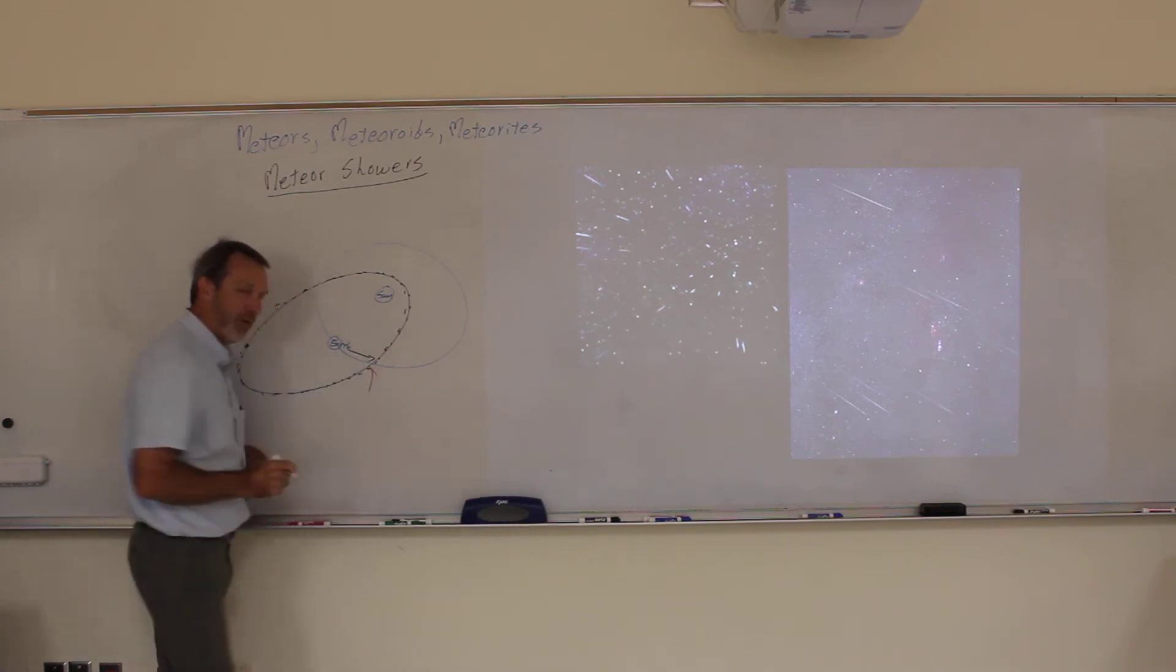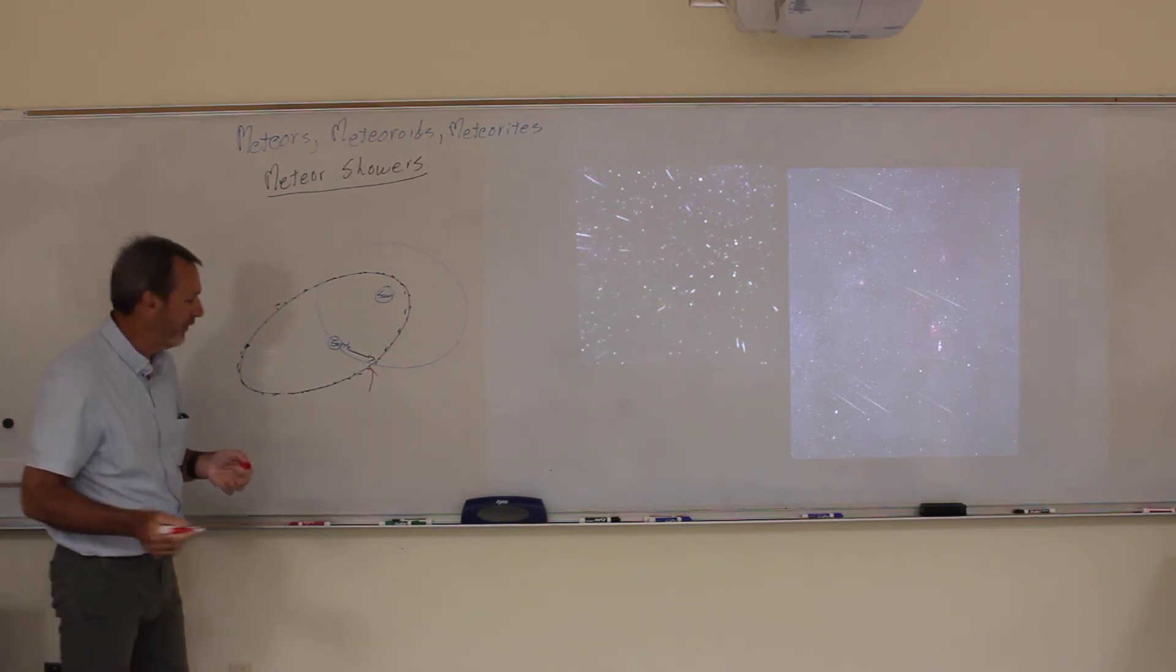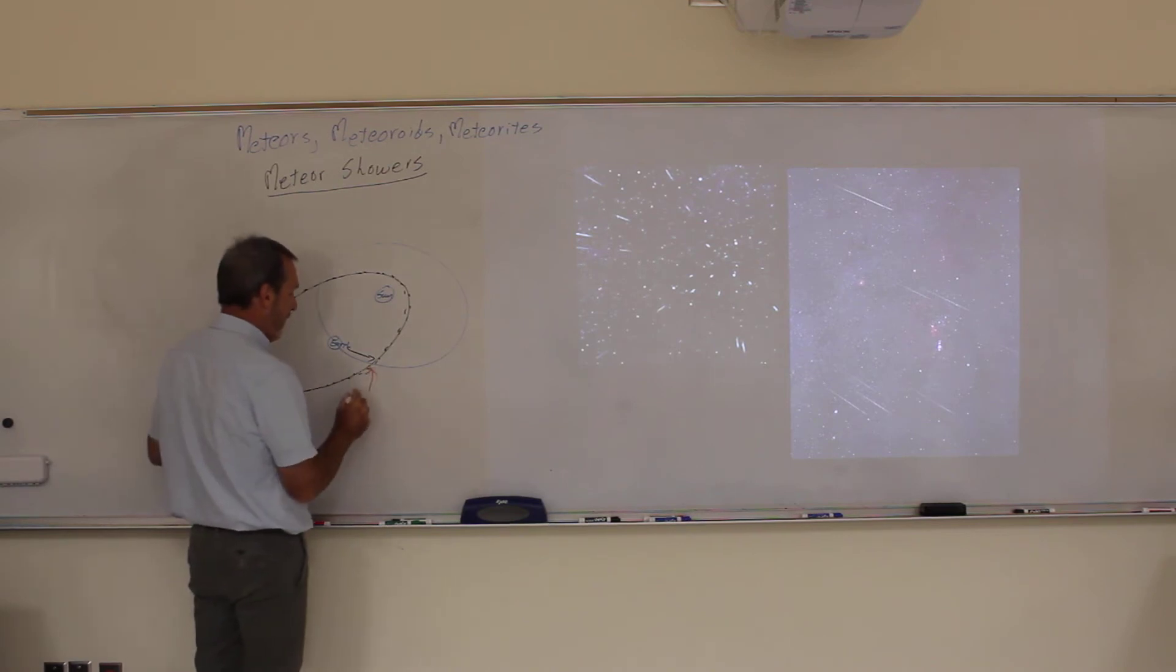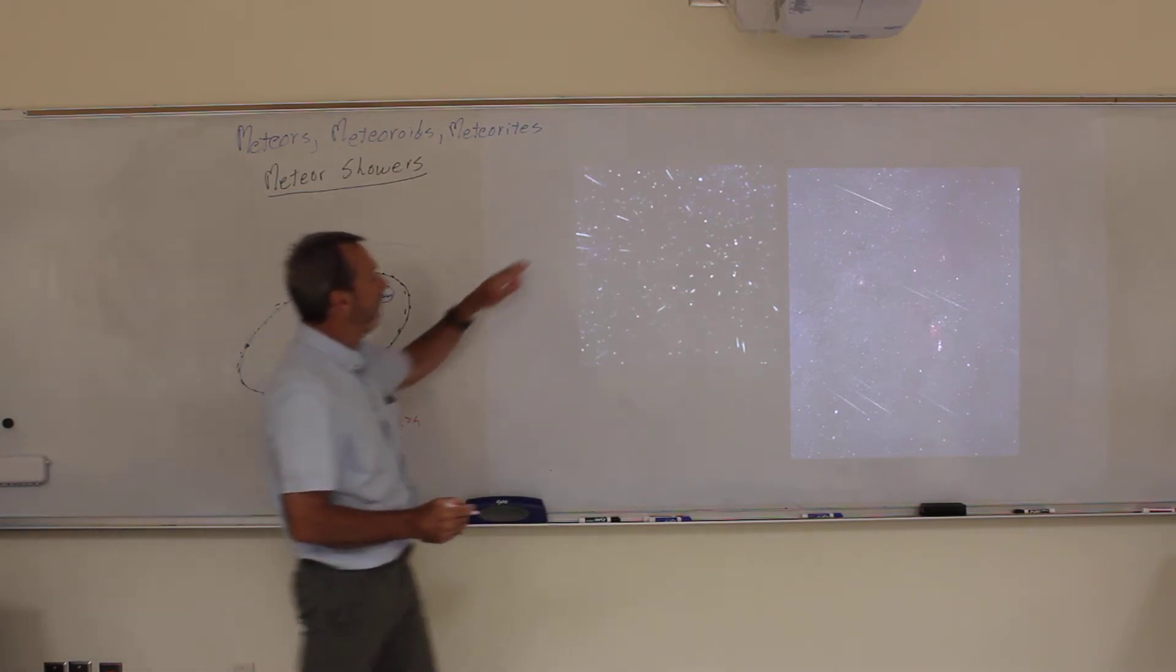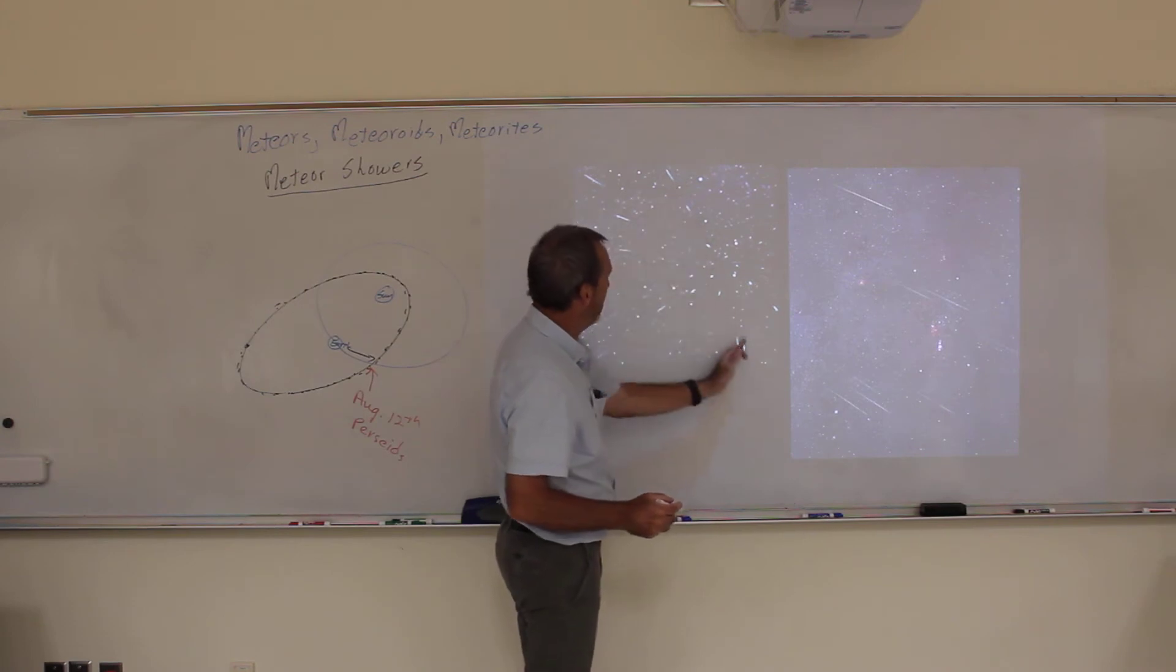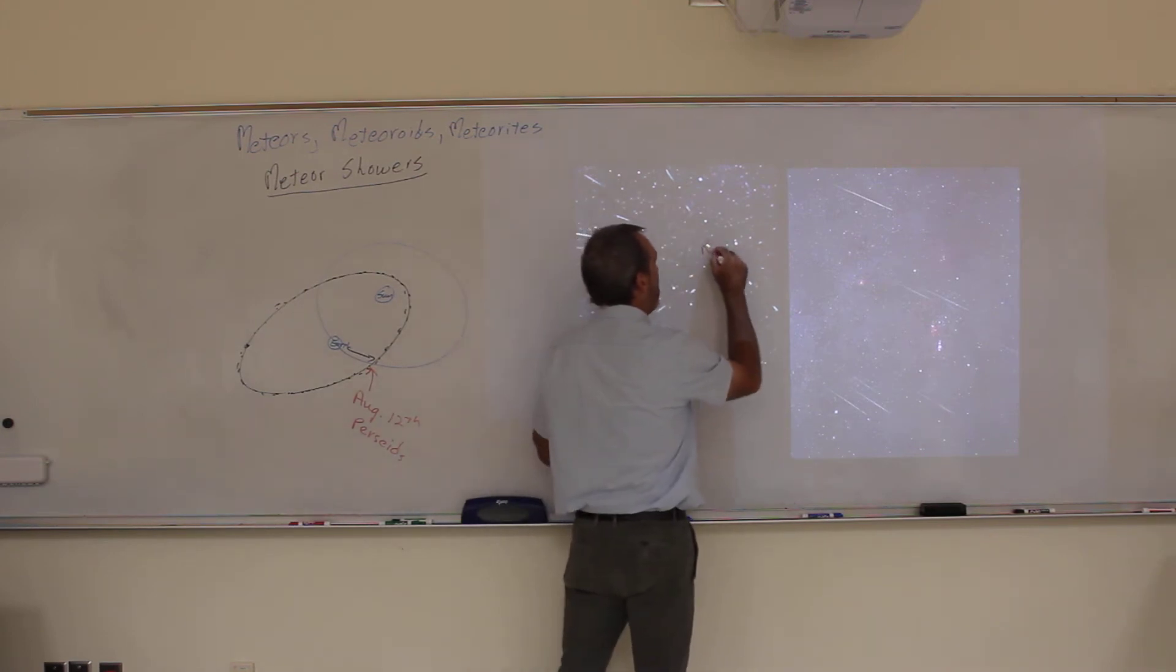And the earth always gets back to that same spot in its orbit at the same time. So the earth, when it's always there, which is pretty much the same time every year, will have a meteor shower. Like one of the most famous is around August 12th every summer. It's called the Perseids. So all the meteors, if you draw a line backwards from all these meteors, they all seem to come from a point in the sky right there. We call that point the radiant.